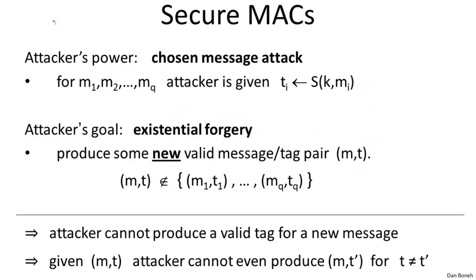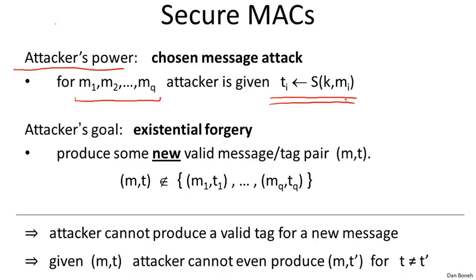Next, we want to define what it means for a MAC system to be secure. As usual, we define security in terms of the attacker's power and the attacker's goal. For MACs, the attacker's power is what's called a chosen message attack: the attacker can give Alice arbitrary messages M1 through MQ of his choice, and Alice will compute the tag for him on those messages. Just like in the case of a chosen plaintext attack, it's very common in the real world that the attacker can give Alice a message, she computes the tag, and the attacker obtains the resulting tag.